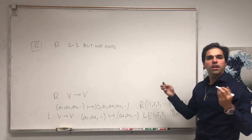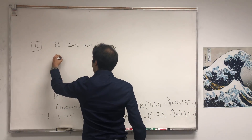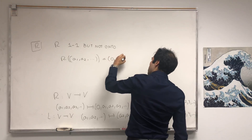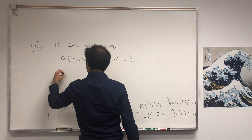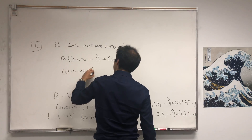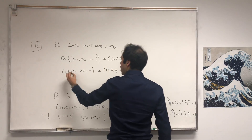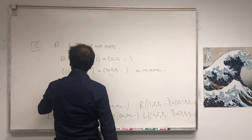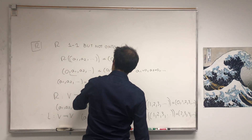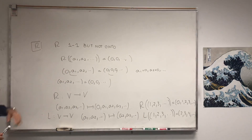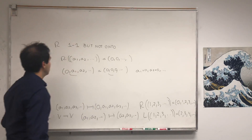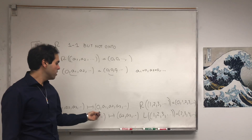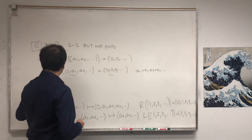To show a linear transformation is one-to-one, show that its null space is trivial. Suppose R of (a1, a2, ...) gives you the zero sequence. Then shifting to the right gives zero, a1, a2, ... equals zero, zero, zero, ... Comparing entries, a1 is zero, a2 is zero, and every ai is zero. So the null space is trivial — R is one-to-one. But it's not onto because, for example, the sequence one, zero, zero, zero, ... is not in the range of R.